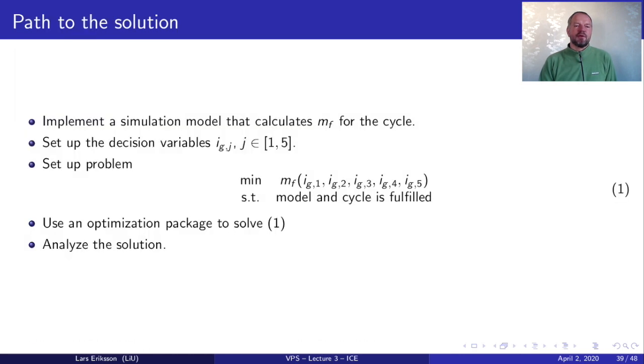The path to solving this problem is that we implement a simulation model that calculates the total fuel consumption over the cycle. So we have a simulation model that simulates the temporary design that we have come up with. And the temporary design is a design with certain values for the different gear ratios IG for the 5 different gears that we have in the vehicle. That means that we have 5 different design variables. These design variables we would like to use to minimize the total fuel over the cycle. And we set up a constraint which says that the model and the cycle must be fulfilled. When we have formulated this problem we use an optimization package to solve this problem. And finally we analyze the solution too.